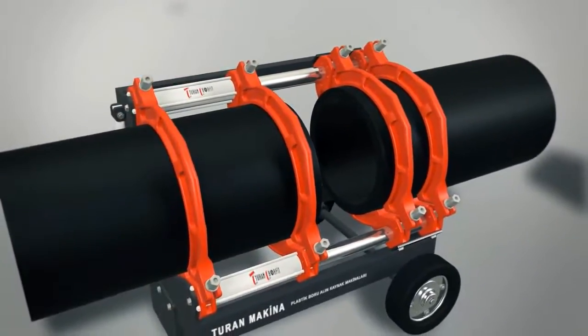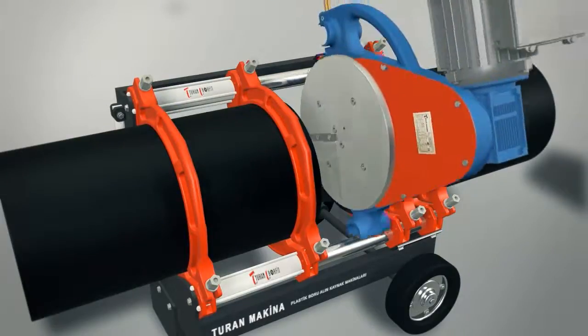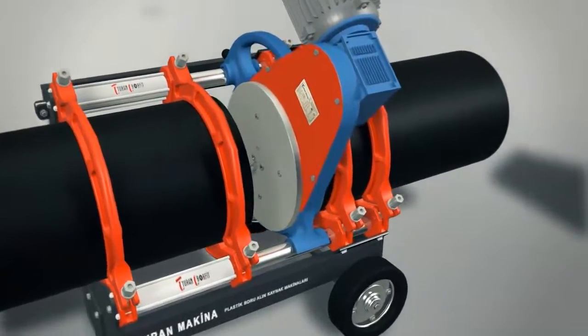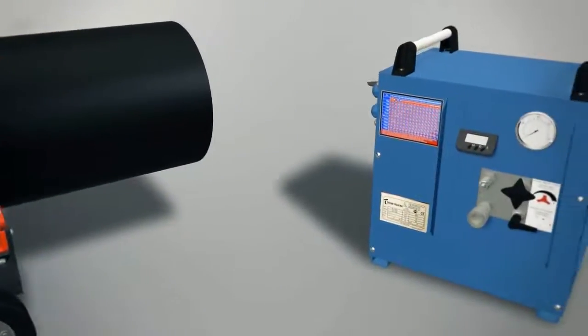After pipes are connected to machine, place trimmer between pipes. When pressure of the machine is zero, press ahead walking button of machine.